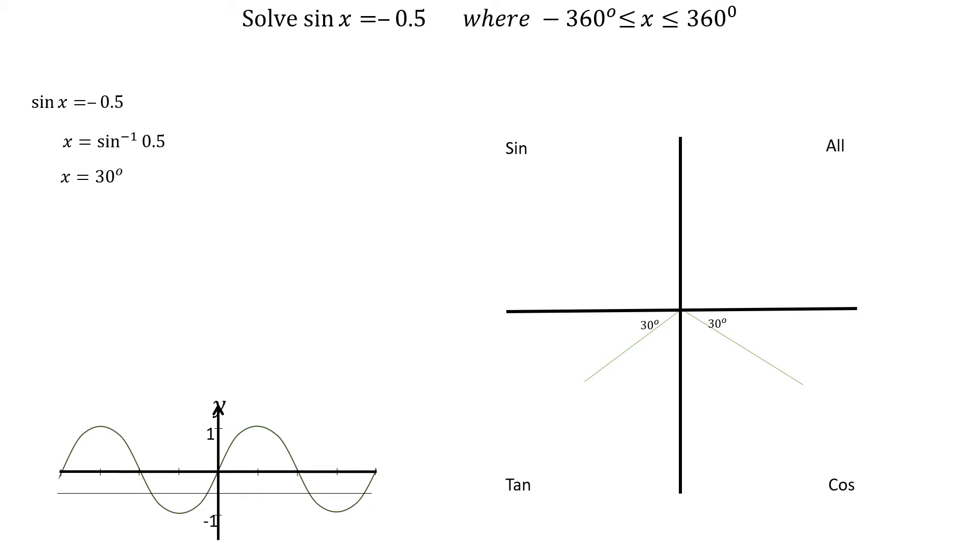Starting with x between 0 and plus 360 degrees, we go in an anti-clockwise direction. The first angle is at 180 plus 30 degrees, which is 210 degrees, and the second angle is at 360 minus 30 degrees, which is 330 degrees.